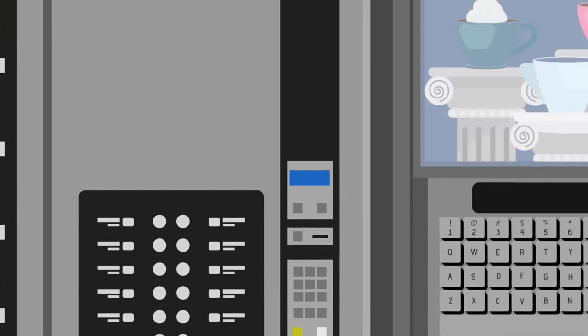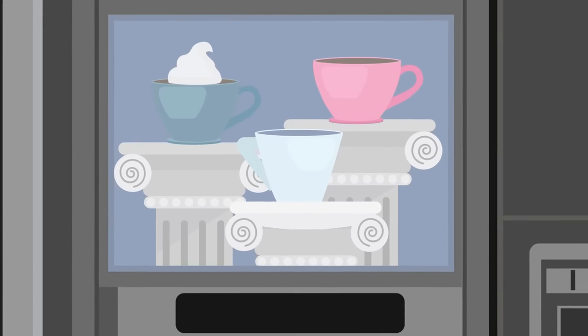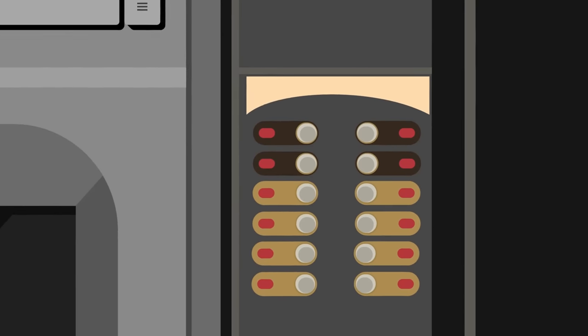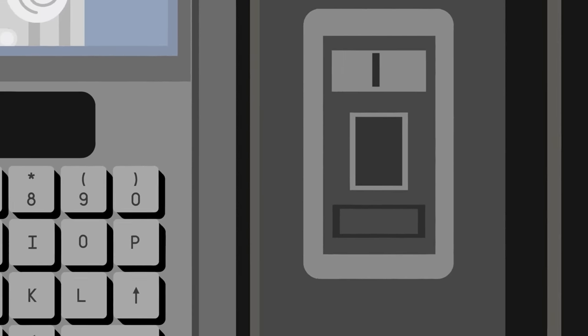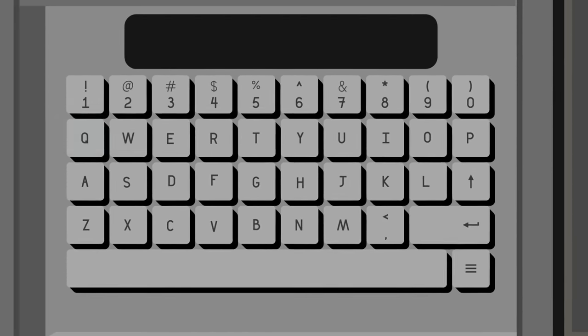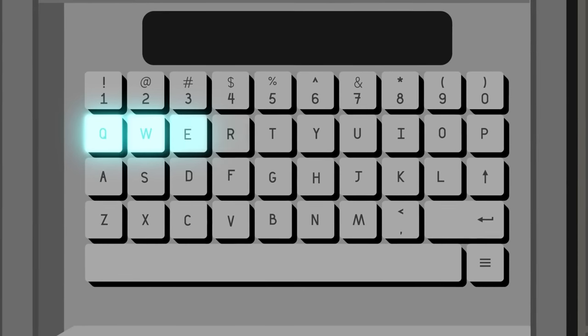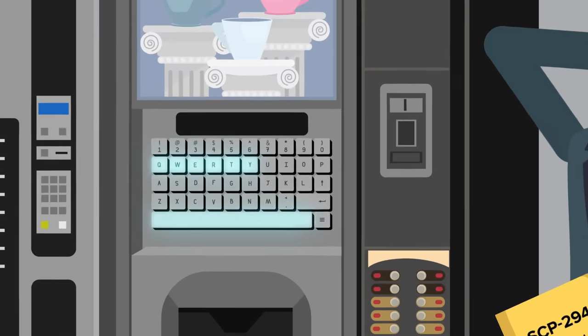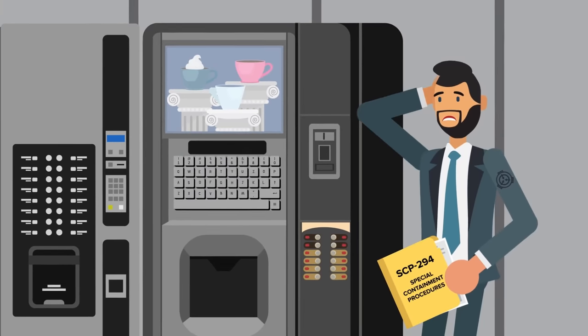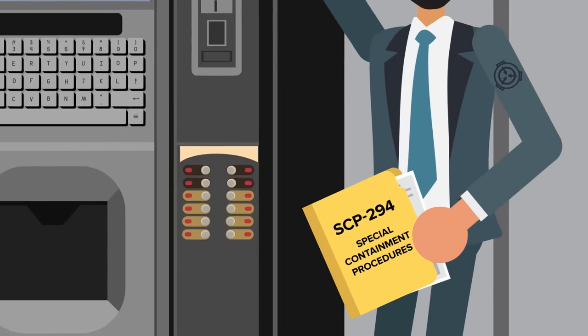It's almost the size of a vending machine and has a big colored window showing a few cups of coffee, along with the slots for cash and coins so drinkers can pay for their espressos. But the most notable feature on SCP-294 is the full keyboard on the front panel. It's a typical QWERTY keyboard, just like yours with a spacebar and everything. Why on Earth would a coffee machine need a keyboard?